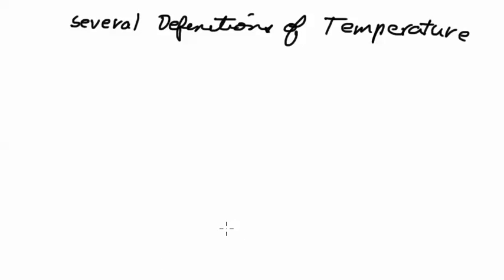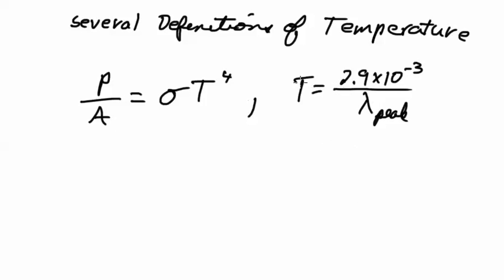I'd like to talk about the different concepts that I have for temperature. First concept has to do with blackbody radiation. One of the equations is power over area equals sigma T to the fourth. The other equation is Wien's law, which is basically that the temperature is inversely proportional to the wavelength: 2.9 times 10 to the negative third Kelvin per meter divided by the peak wavelength.